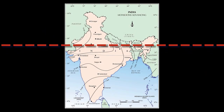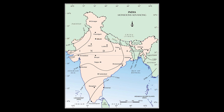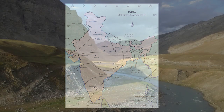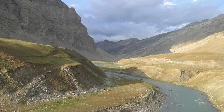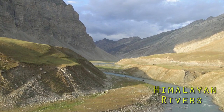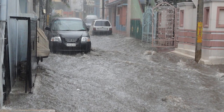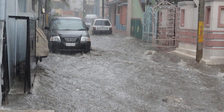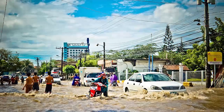But whenever the axis shifts closer to the Himalayas, there are longer dry spells in the plains and widespread rain occurs in the mountainous catchment areas of the Himalayan rivers. These heavy rains bring devastating floods causing damage to life and property in the plains.